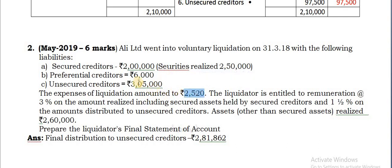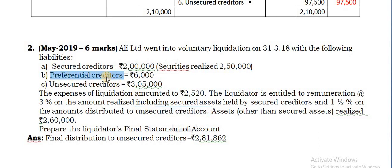We may consider this is almost double the amount of the previous problem, but there is a little change. The liquidator is entitled to a remuneration at the rate of 3% on the amount realized including the secured assets held by the secured creditors, and 1.5% on the amount distributed to unsecured creditors. Preferential creditors are always part of unsecured creditors.